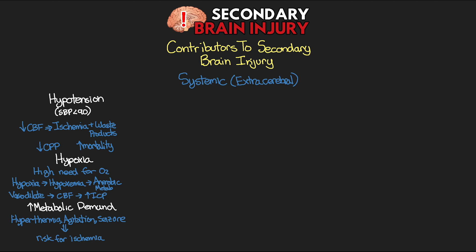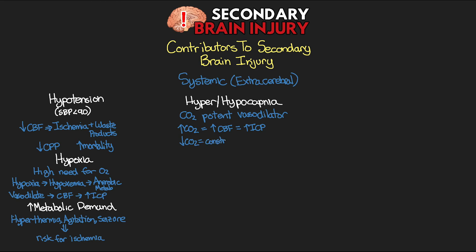The next thing I want to talk about is either hypercapnia or hypocapnia. Carbon dioxide is actually a potent vasodilator. In hypercapnia — if the patient has a depressed respiratory drive or is on the vent without sufficient tidal volume — CO2 can become elevated, and because it's a vasodilator this can increase cerebral blood flow but ultimately increase intracranial pressures. On the flip side, hypocapnia — blowing off too much CO2 — leads to vasoconstriction and an elevation in pH, which can decrease ICP but can also lead to cerebral ischemia.